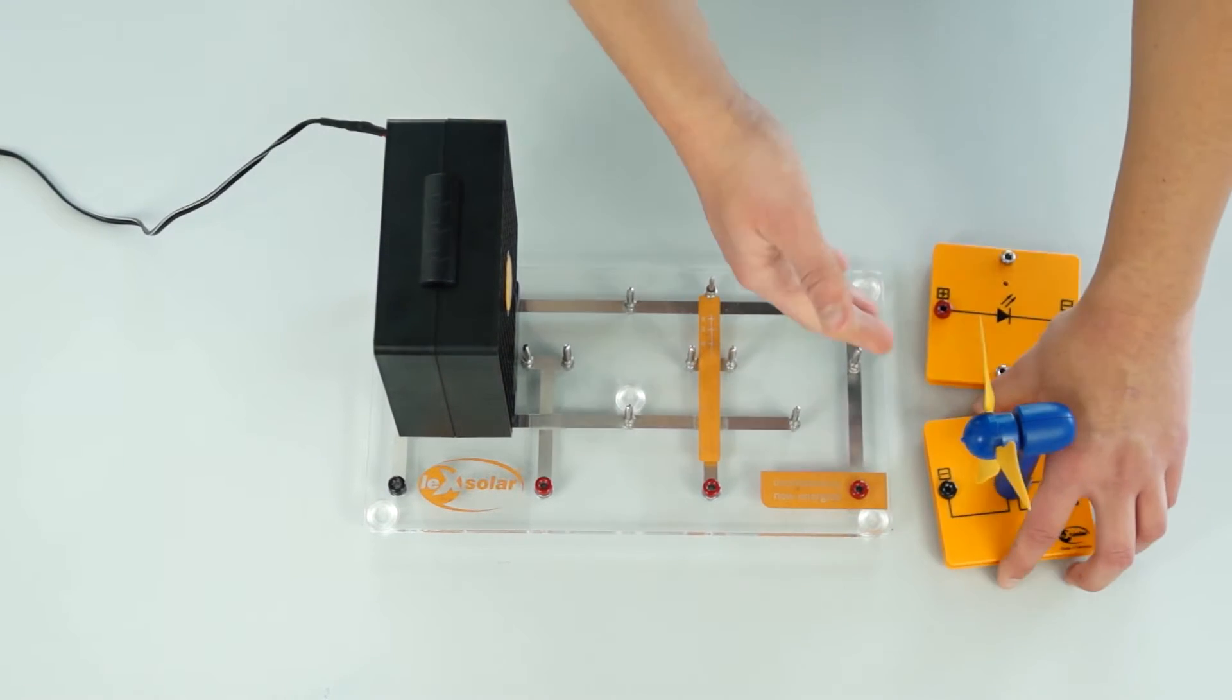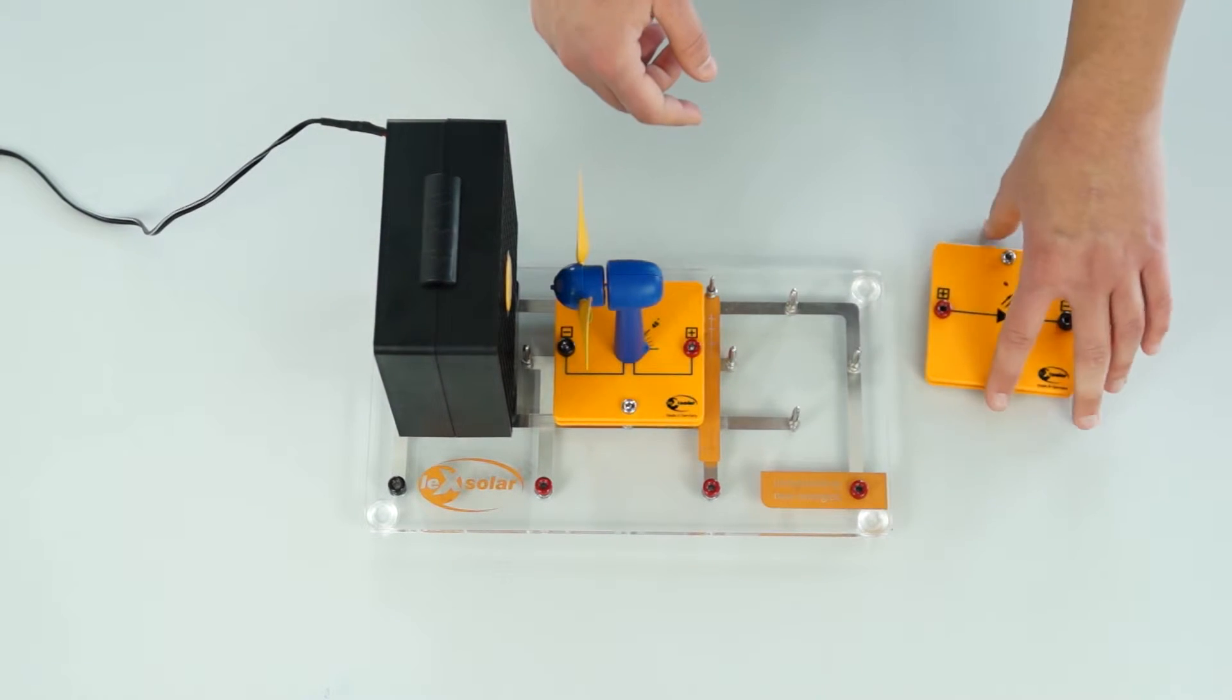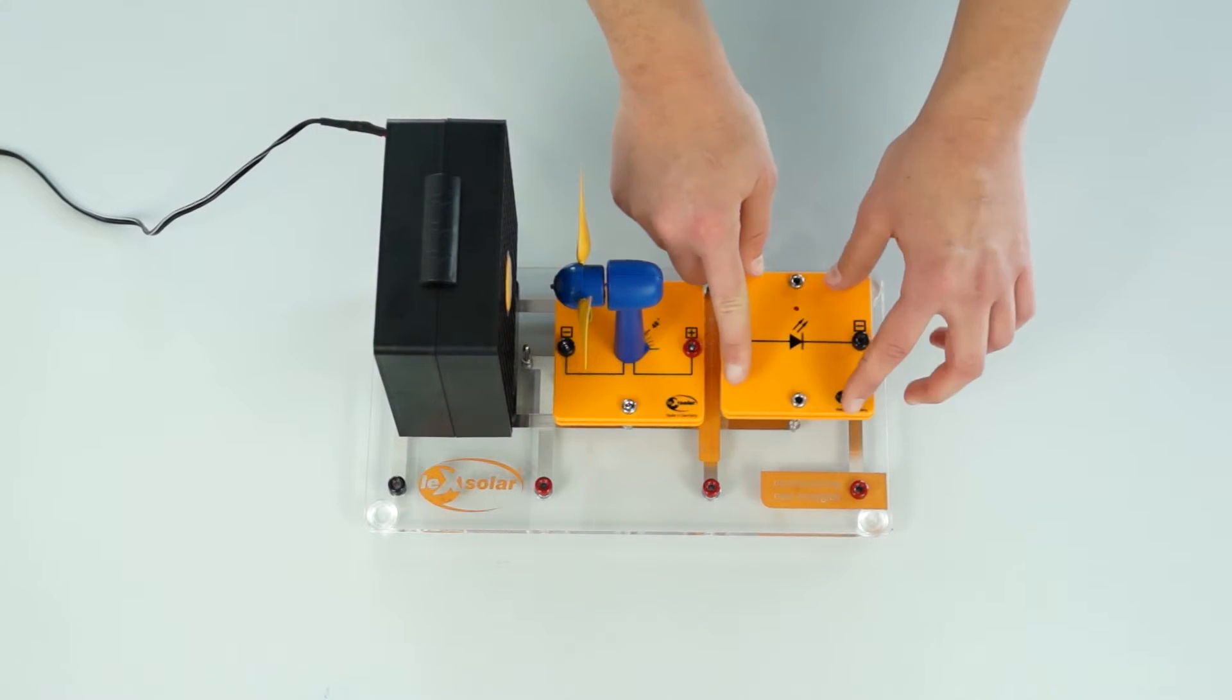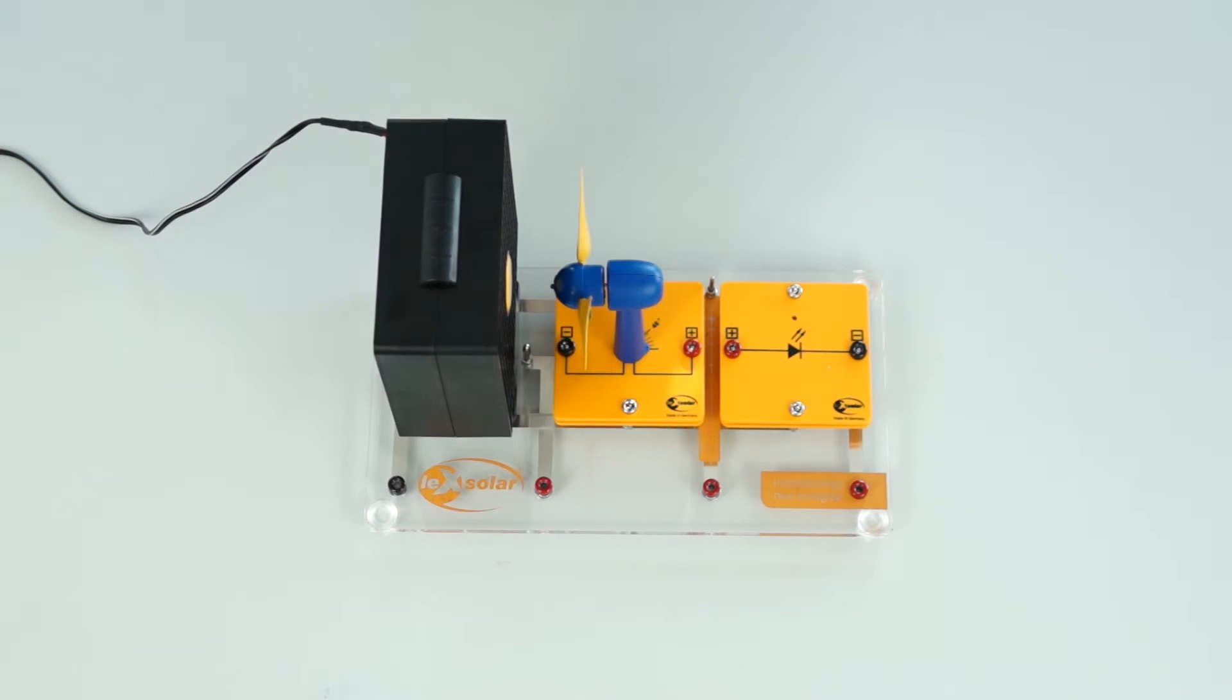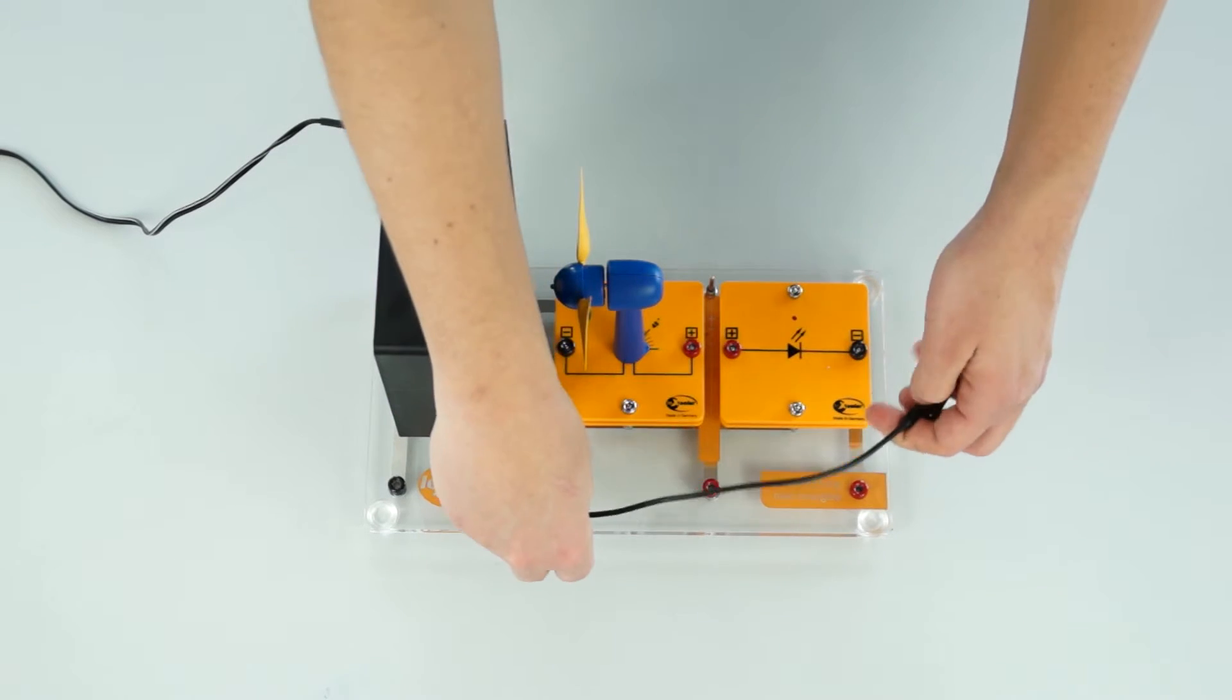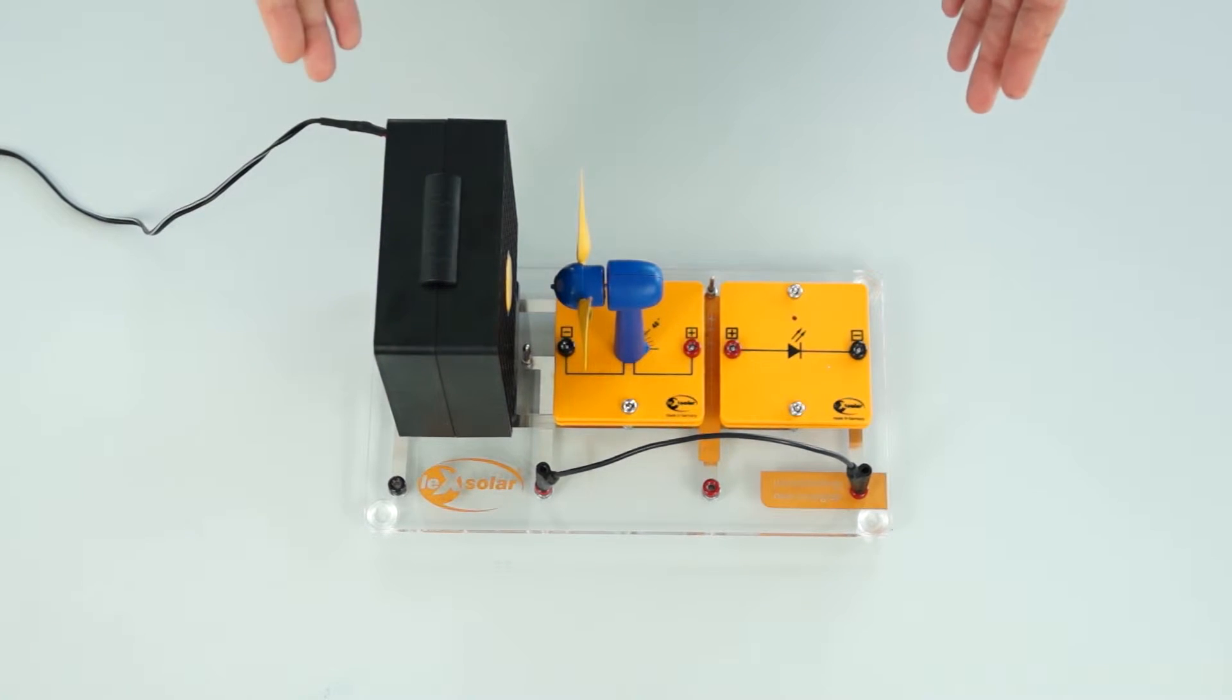Then we also plug the wind turbine with its module on the base unit. Care should be taken with the correct polarity. The LED is plugged in series to the wind turbine. The circuit is closed with simple cables. With this our assembly is complete and the experiment can be started.